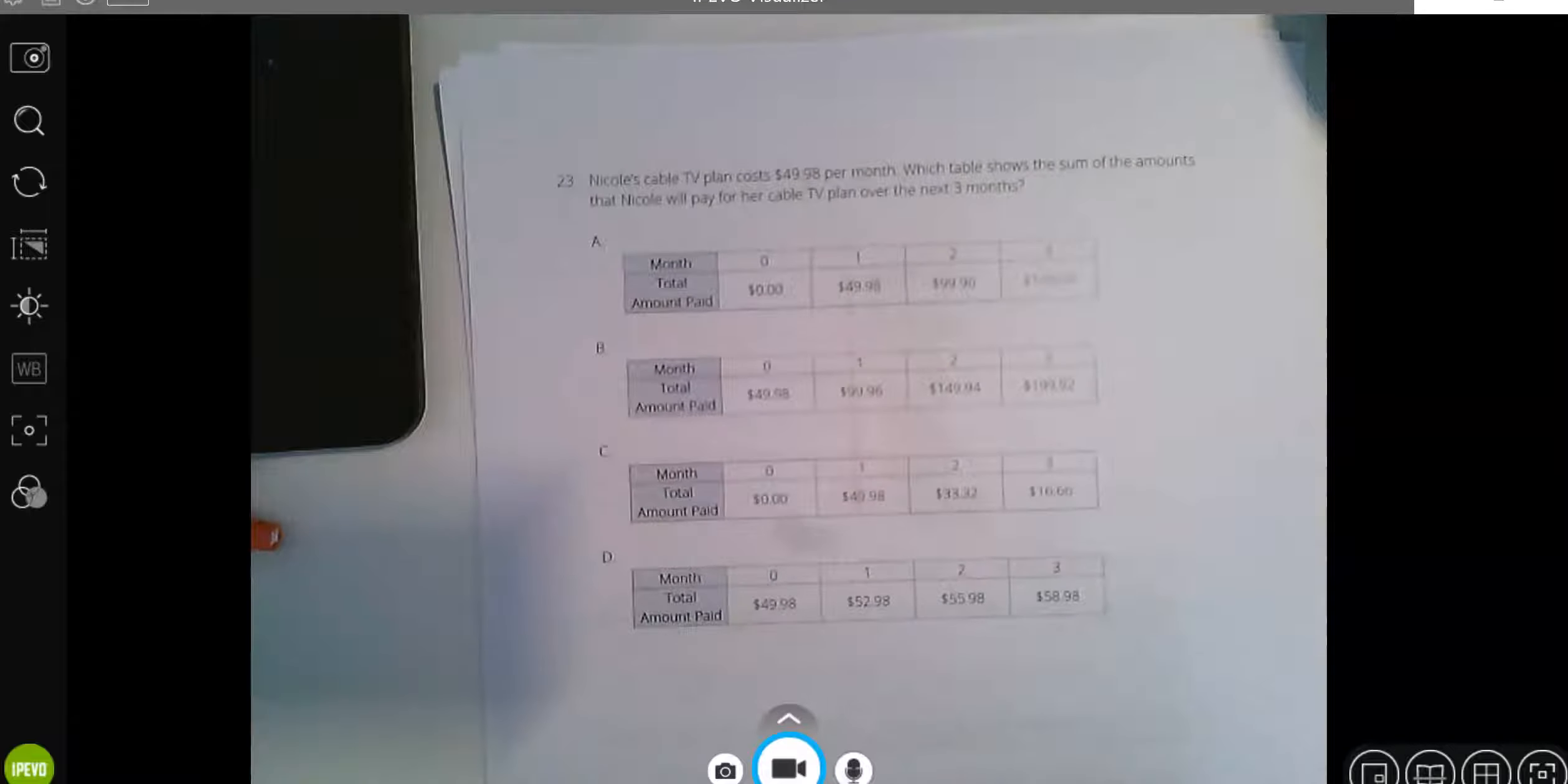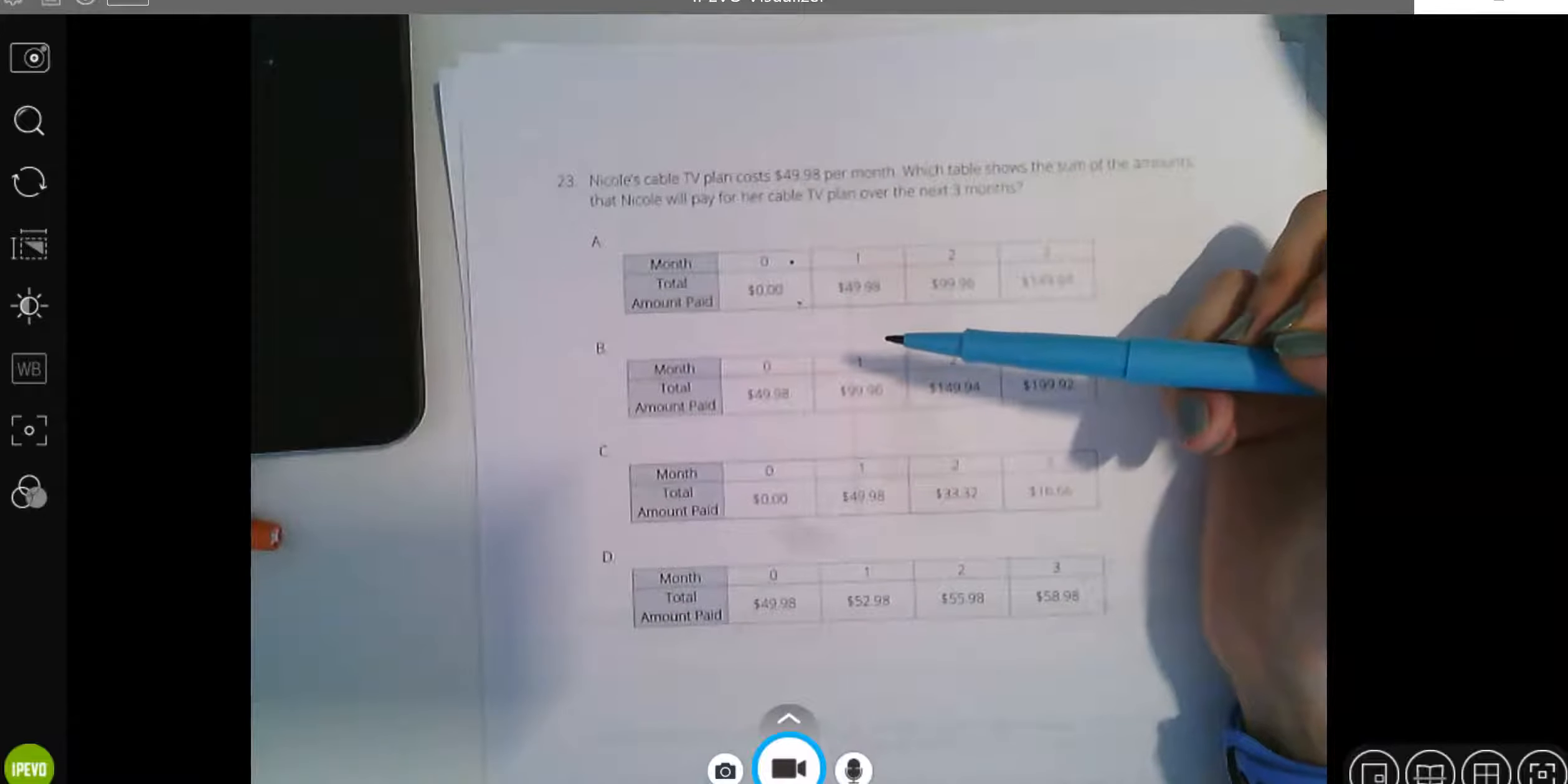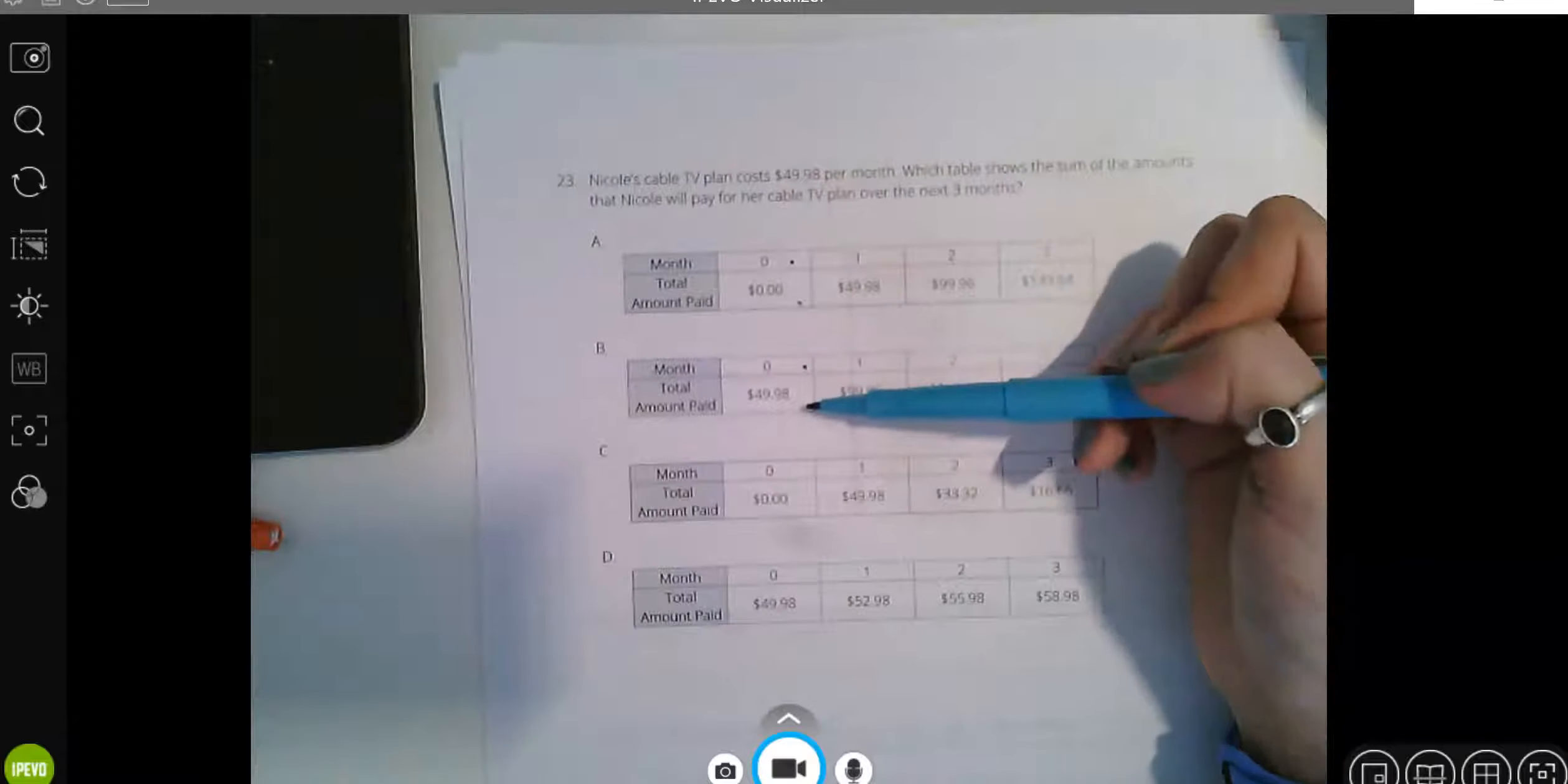Alrighty. Nicole's cable TV plan costs $49.98 per month. Which table shows the sums of the amounts that Nicole will pay for her cable TV plan over the next three months? Let's see, at zero months she's paid zero dollars. Yeah that makes sense. She hasn't started. She hasn't paid anything.